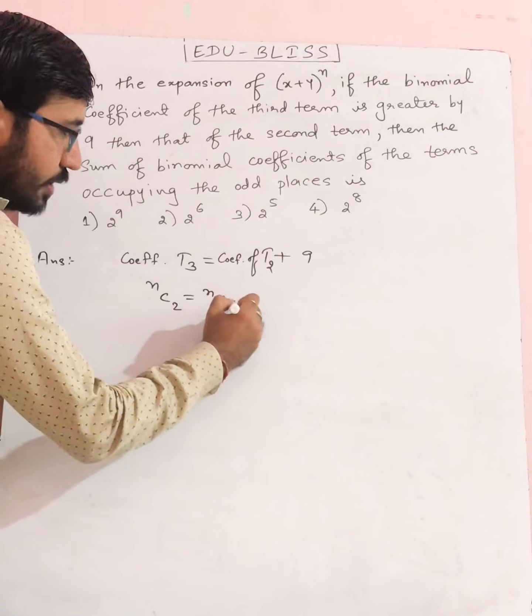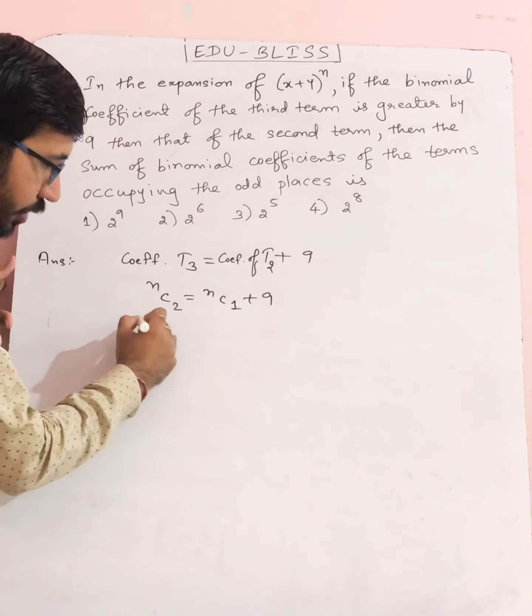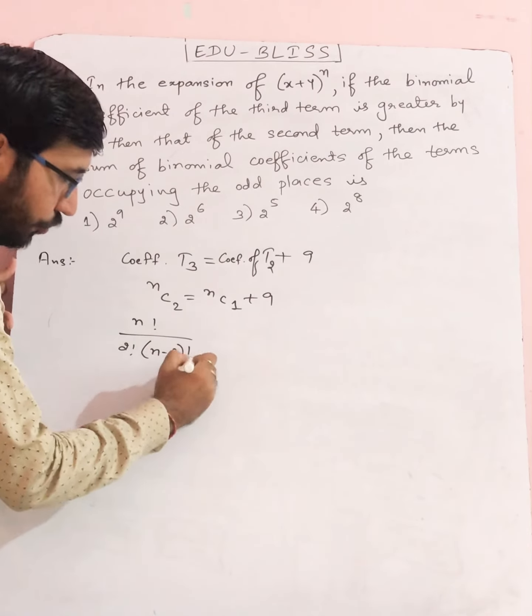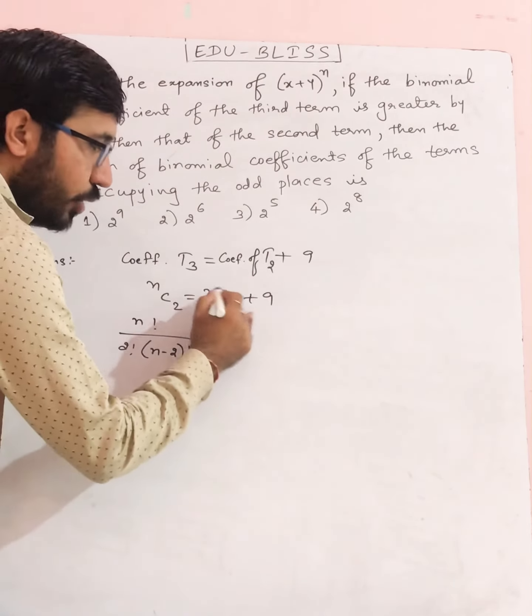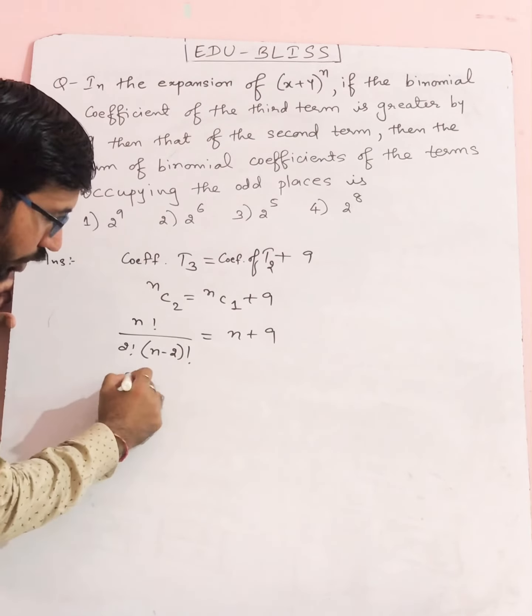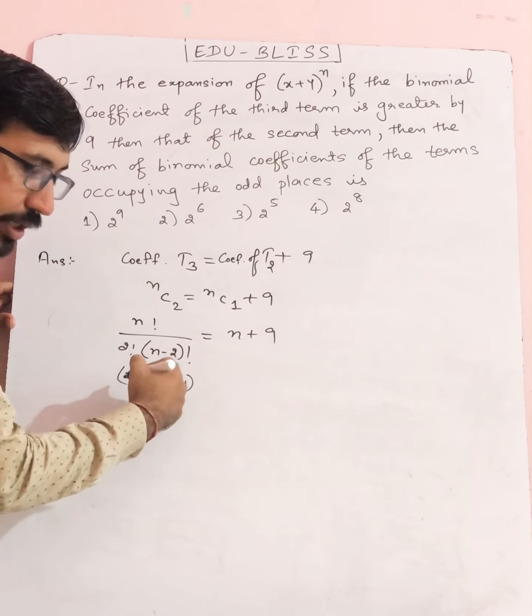Simplifying: n factorial divided by 2 factorial times (n-2) factorial equals nC1, which we know is n plus 9. If you open it, n(n-1)(n-2) factorial, cut it out... 2 times (n-2) factorial cancels.